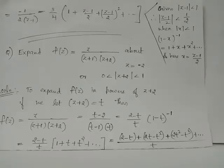Expand f of z equals z over (z plus 1)(z plus 2) about the point z equals negative 2. We are asked to expand the given function f of z in the region 0 less than modulus of z plus 2 less than 1 as a Laurent series expansion.